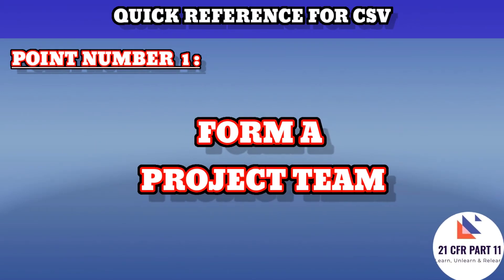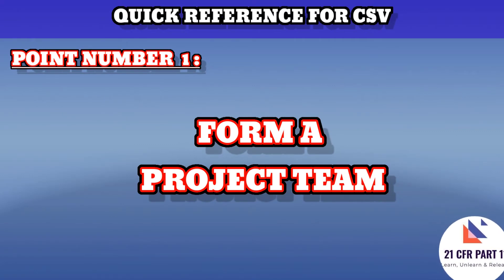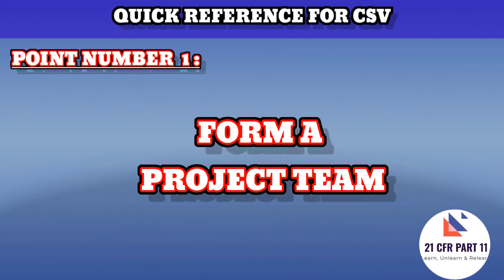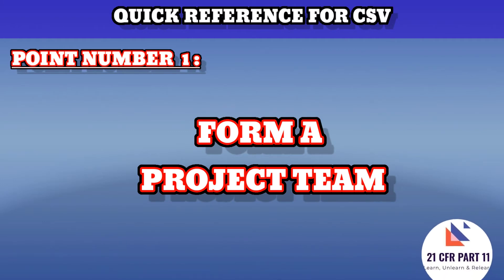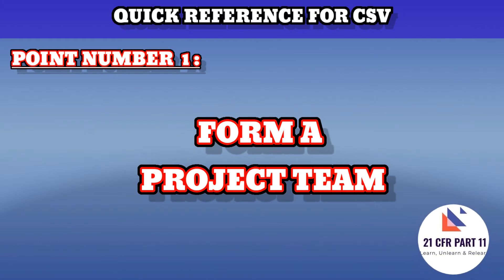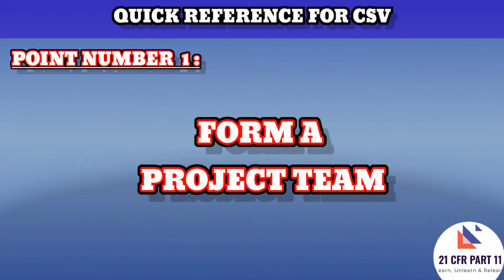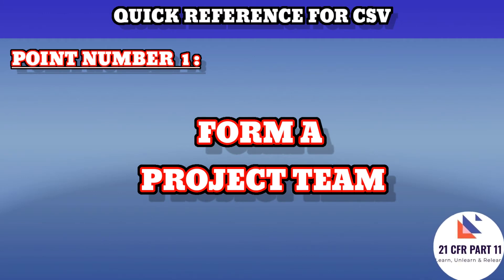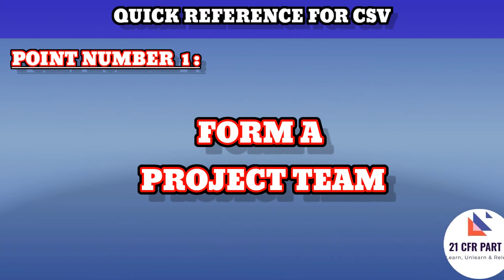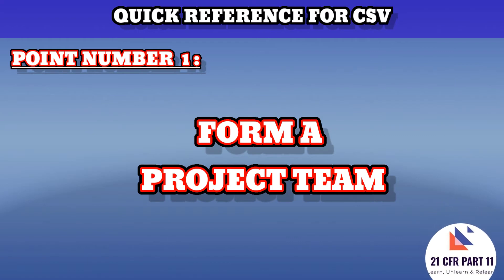Point number one says to form a project team. Representatives from key areas like IT, QA, user groups, and validation groups — if available in your company — as well as regulatory affairs, documentation, and purchasing must be included. This team should meet regularly, make all critical decisions, and communicate to the user base. One member must be defined as the validation lead, and the team must have management support.